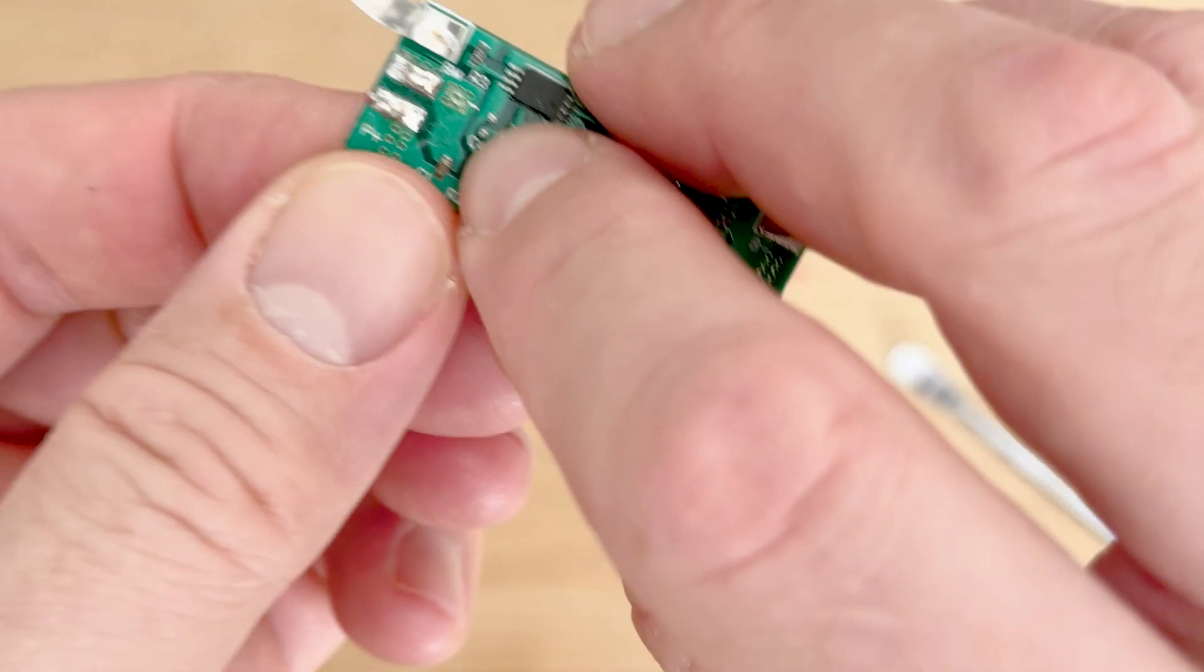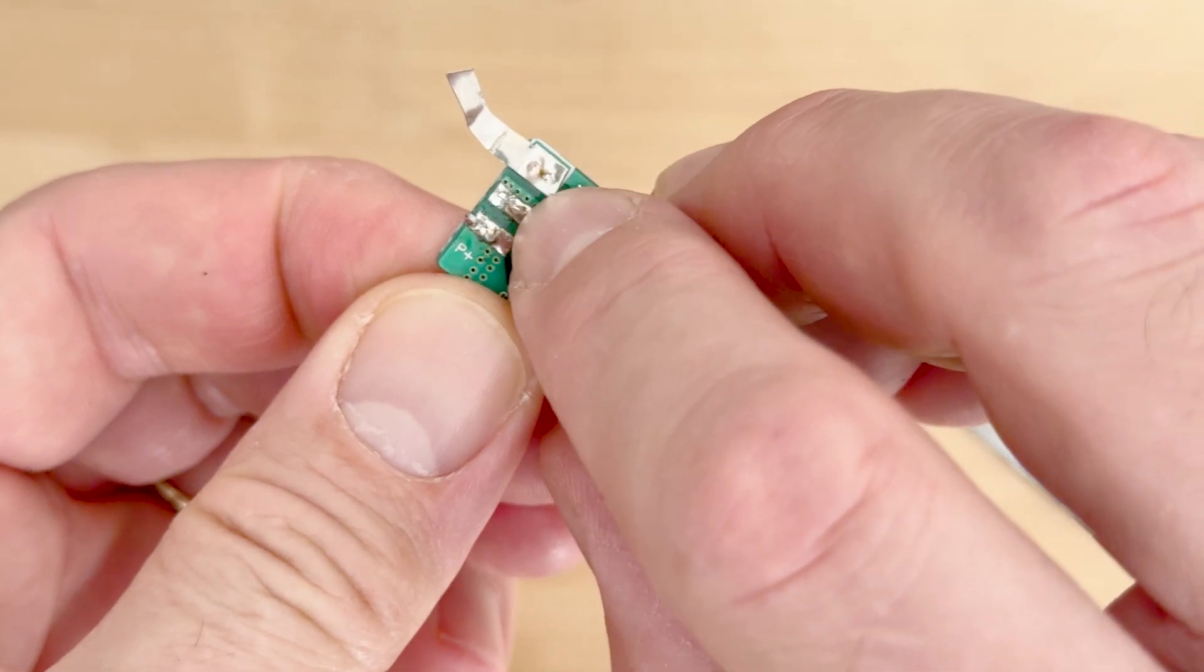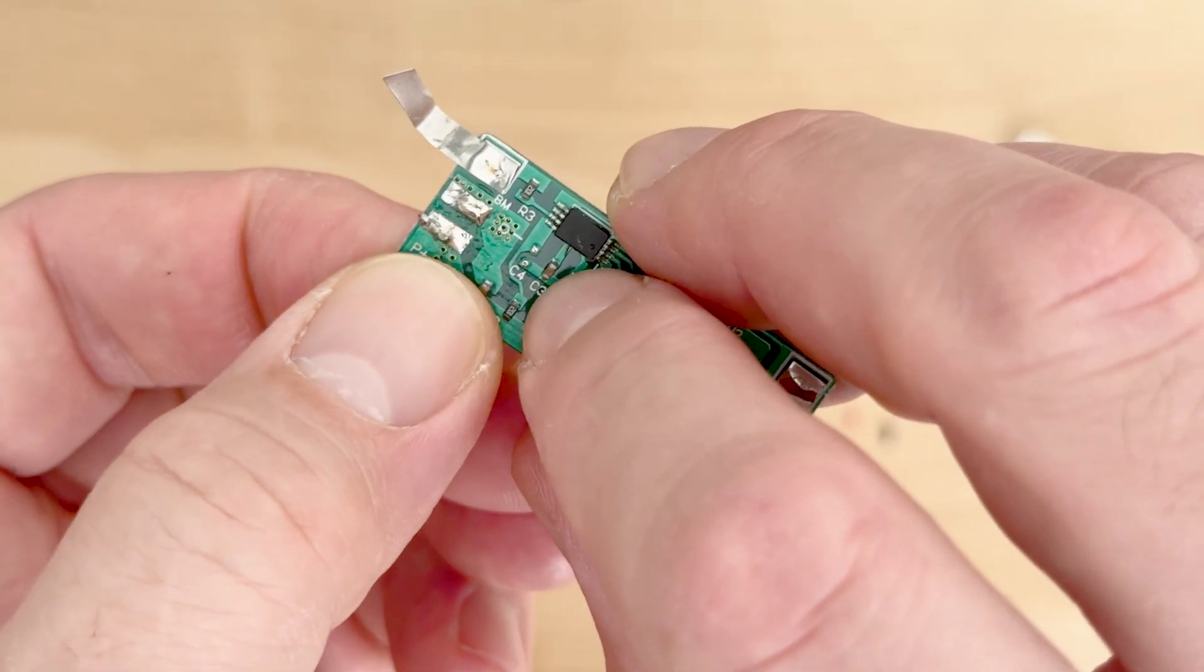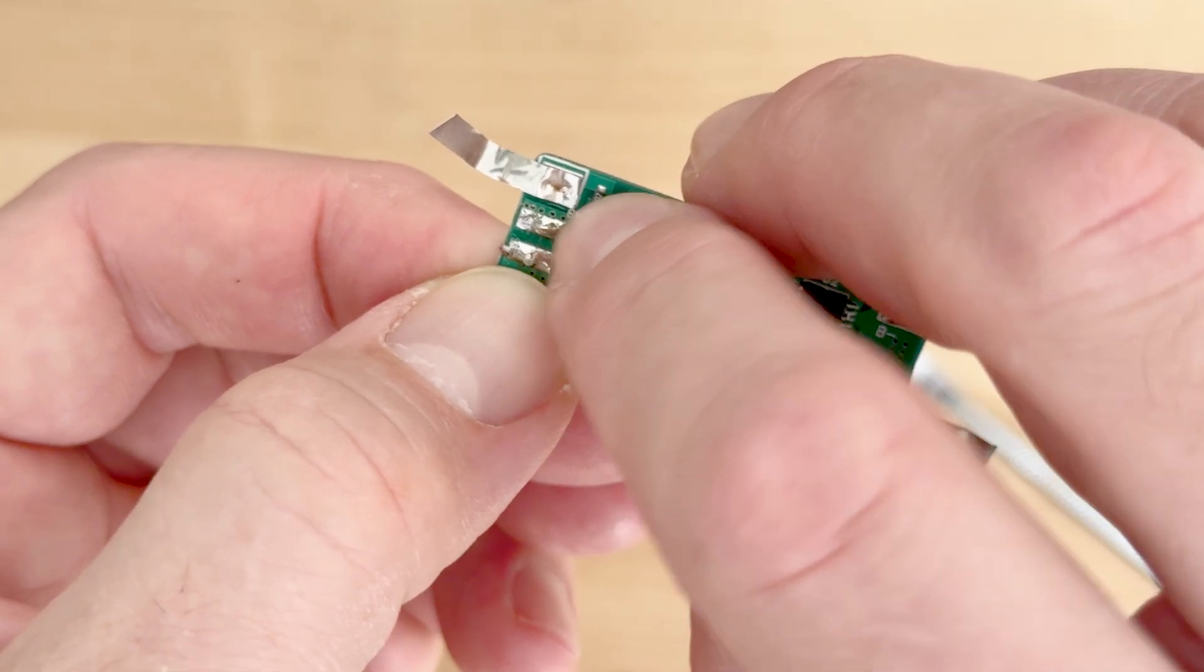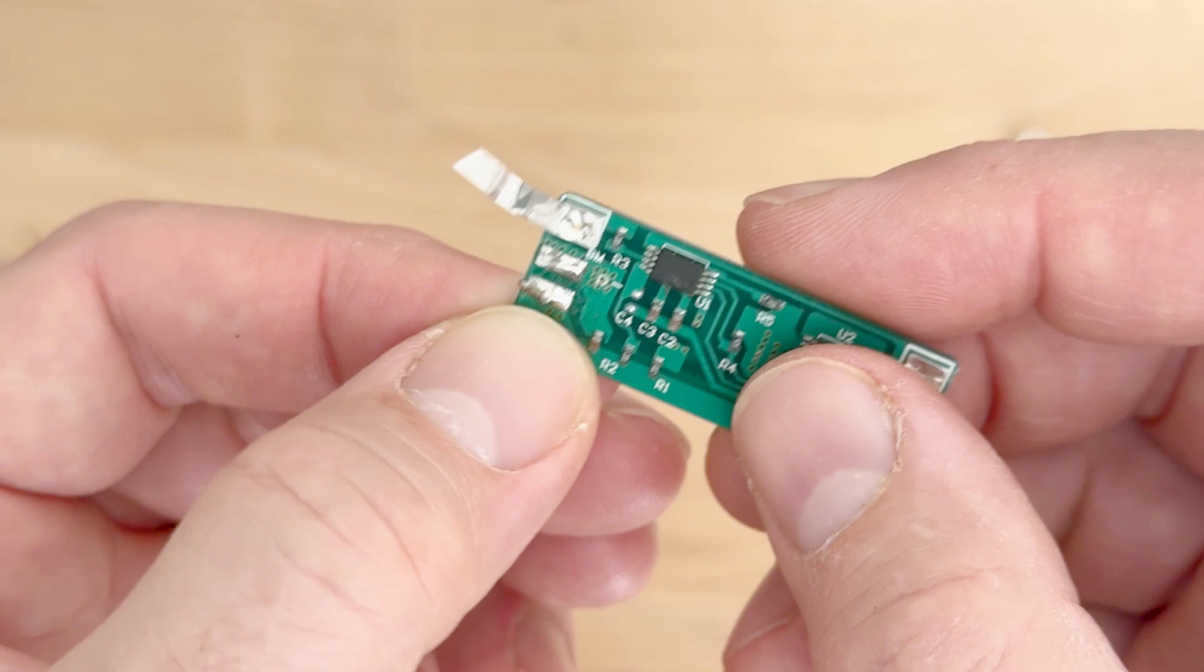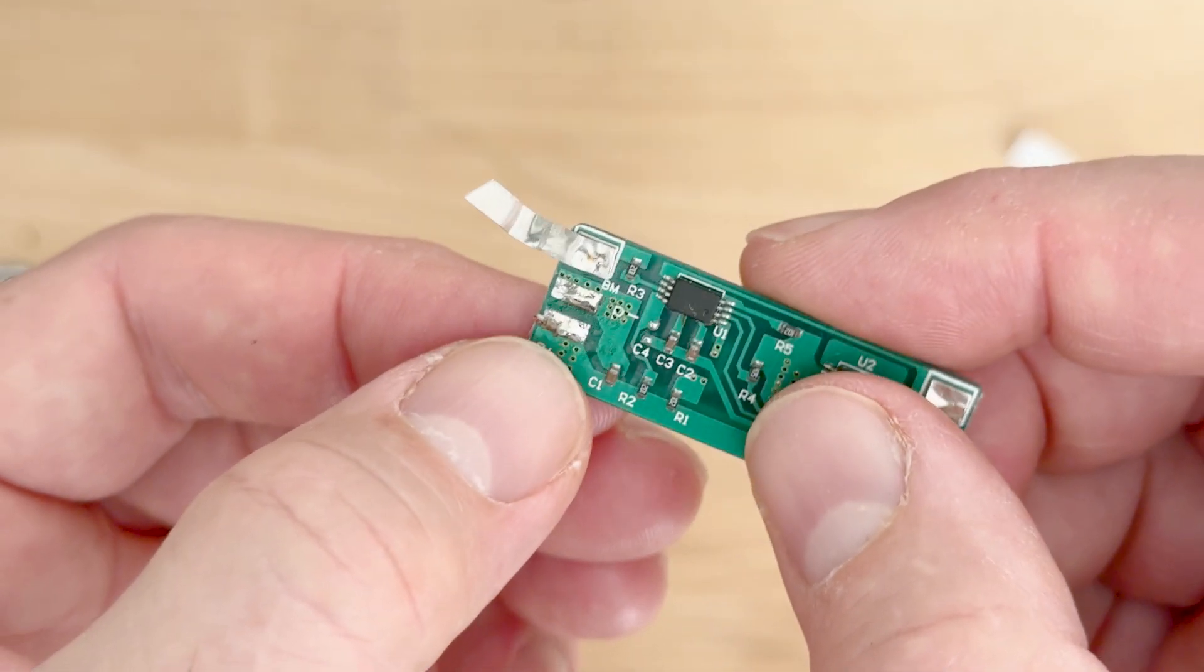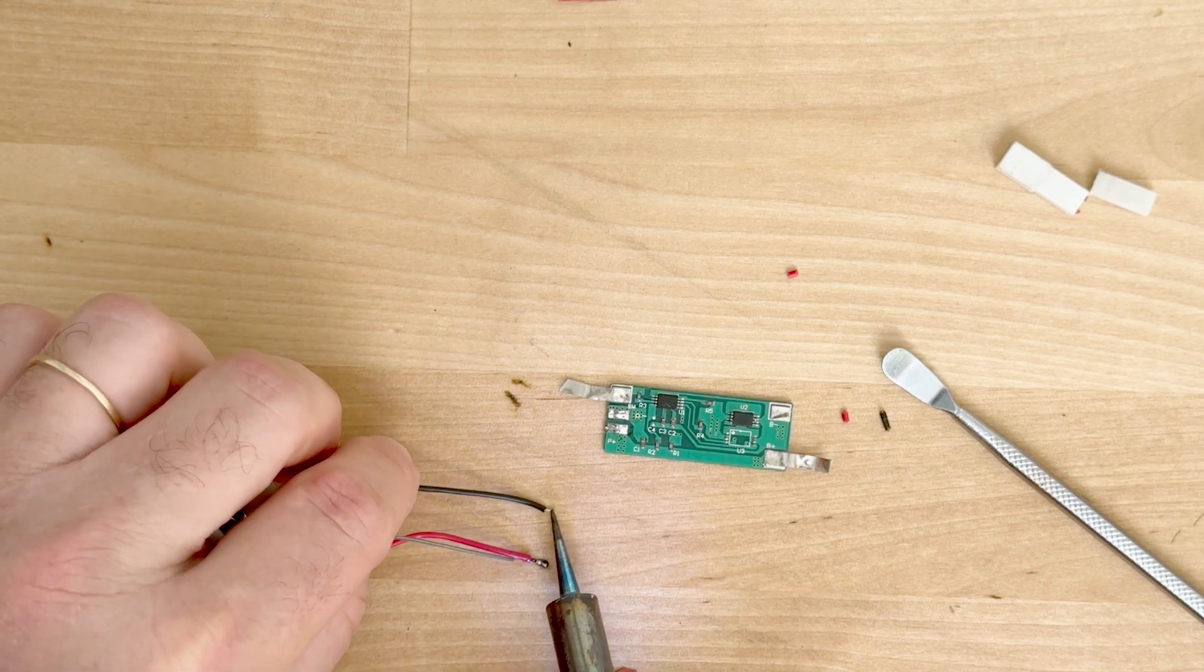And you can see the board is marked positive and negative, so you're going to want to solder the red wire to the positive and the black to the negative. And so you can see it in here where the board is marked. So put a little solder on.